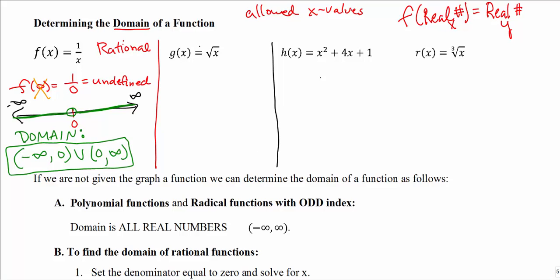Another example is a square root function. The problem here is if we put in a negative 1. We get the square root of negative 1, which is not a real number — we call that an imaginary number. That's the definition of i, our imaginary unit. If something is an imaginary number, it's not a real number, so negative numbers get excluded.